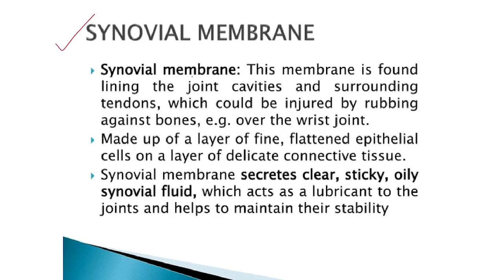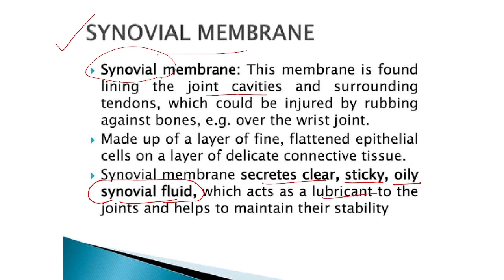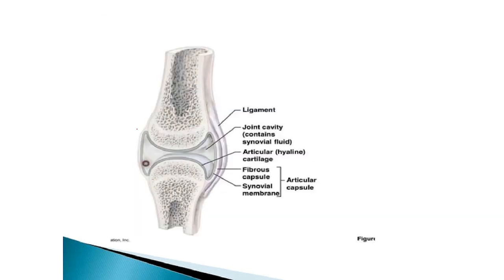The third membrane is synovial membrane. It is a membrane found in the joint cavities. We have different bone joints — shoulder, hip, knee, elbow, and many others — and in these joint cavities there is a membrane called synovial membrane. The synovial membrane secretes a clear, sticky, oily fluid called synovial fluid. It acts as a lubricant because we are continuously moving our joints; the synovial fluid reduces friction between the two layers within the joint.